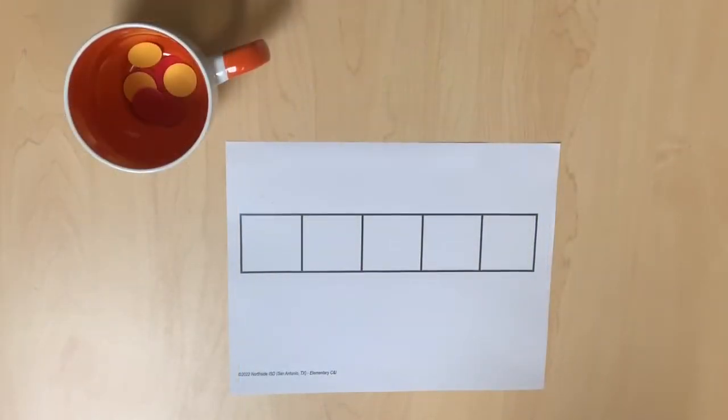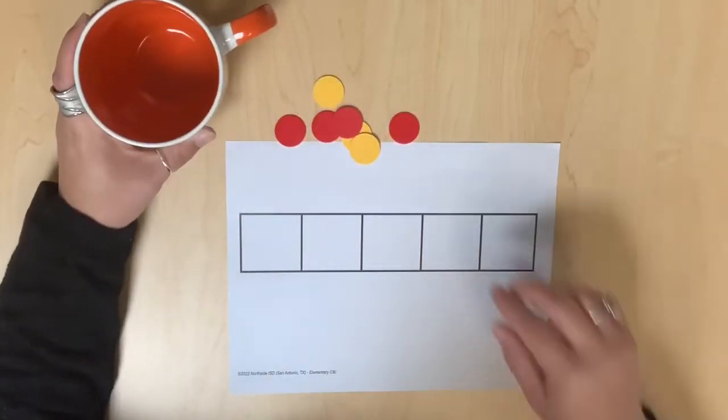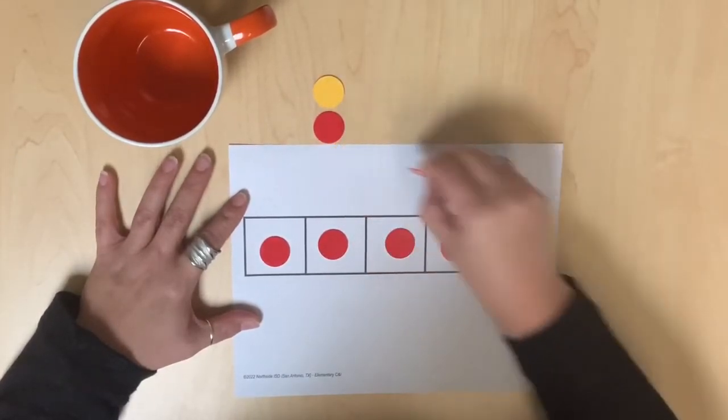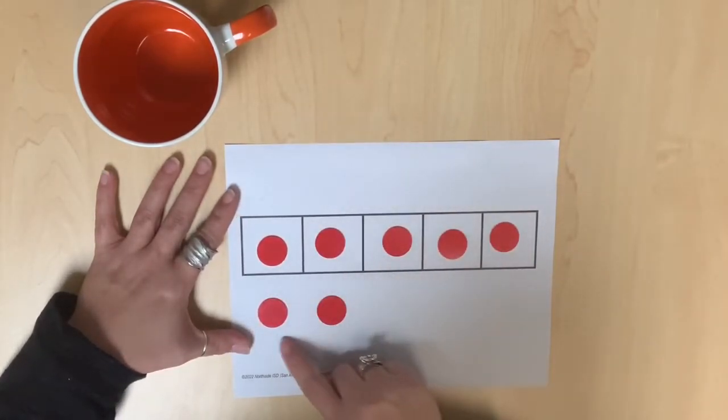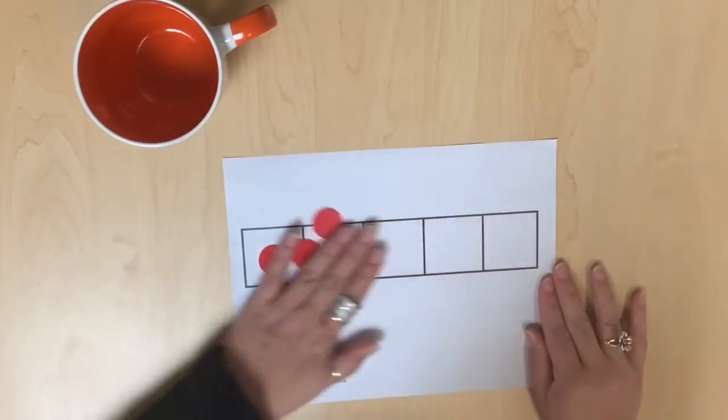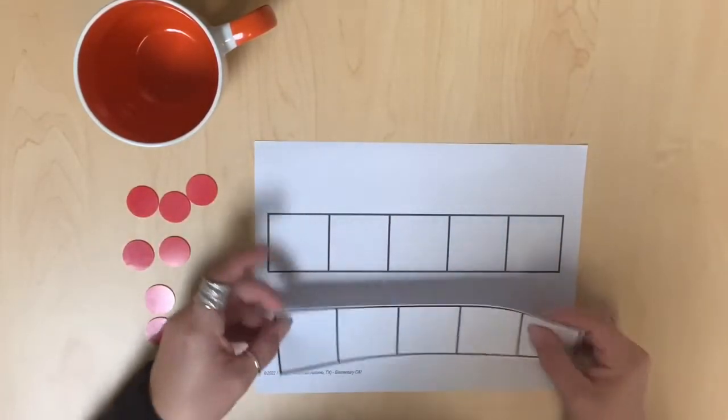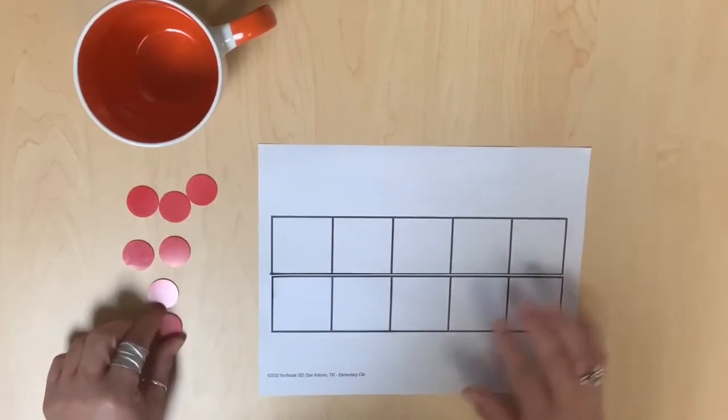Next, students will use a 10 frame as a tool to organize quantities greater than 5. Students are provided with a quantity of objects. Students should realize that quantities greater than 5, such as the quantity of 7, cannot be represented on a single 5 frame. Help students notice the relationship between a 5 frame and a 10 frame by putting two 5 frames together to represent the quantity of 7.